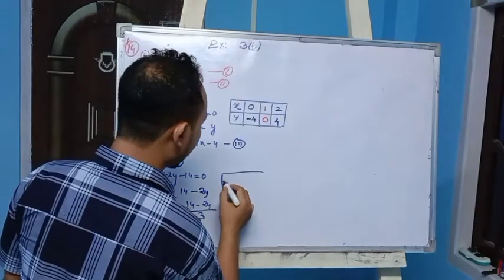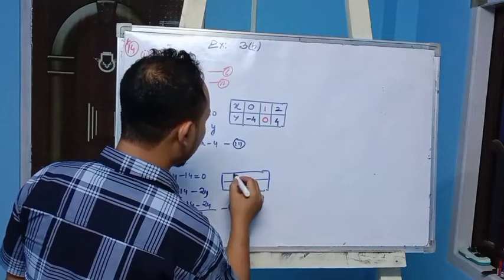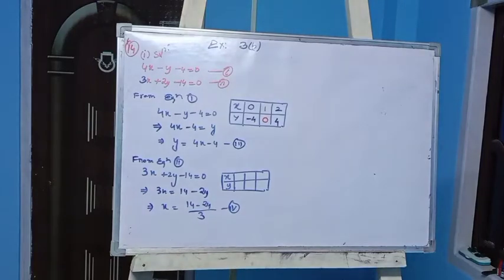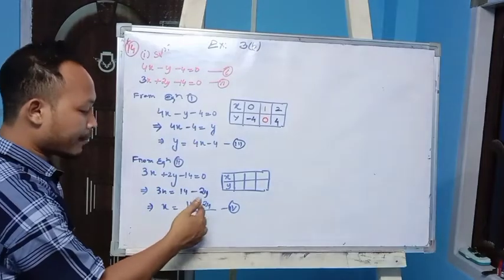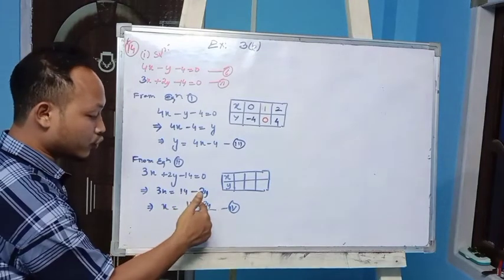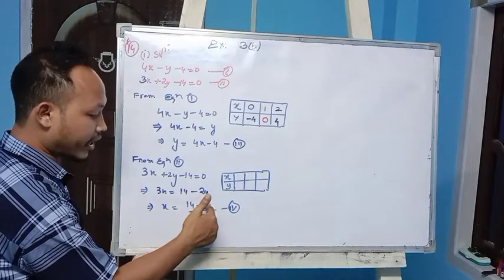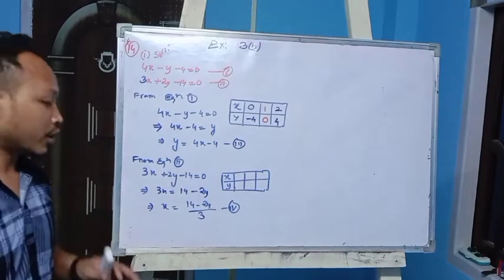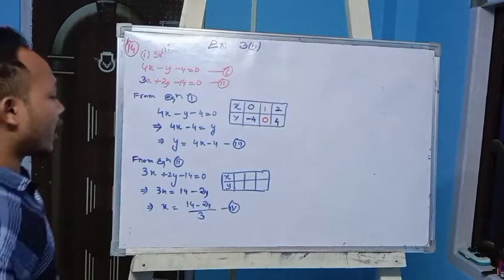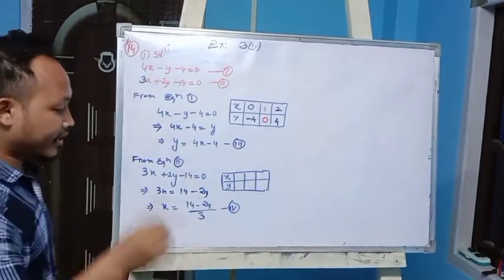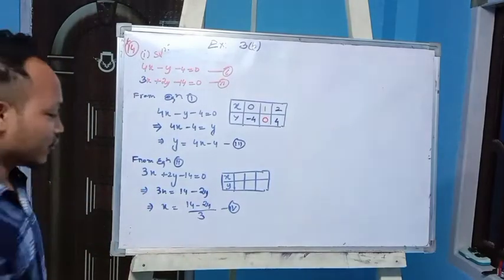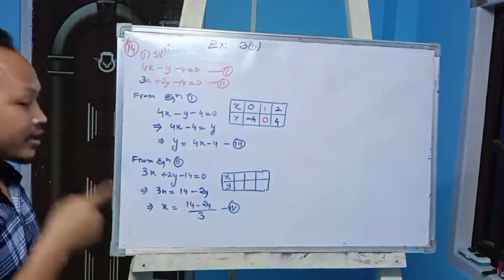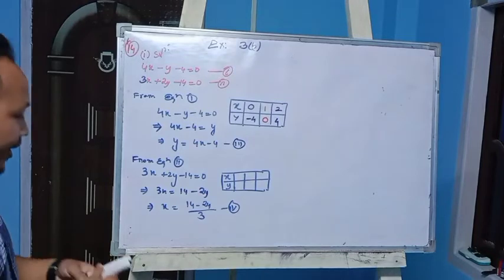For the table of equation 4, I need values of y such that 14 minus 2y is exactly divisible by 3. If y equals 0: 14 minus 0 is 14, and 14 divided by 3 is not exact, so I will not take 0. If y equals 1: 2 times 1 is 2, and 14 minus 2 is 12. 12 divided by 3 is exactly 4, so x equals 4. I can take y equals 1.